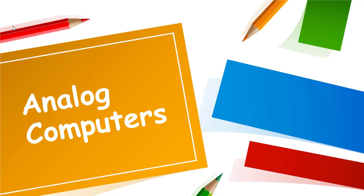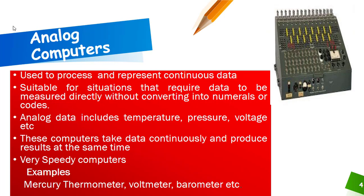The first type is analog computers. Analog computers are used to process and represent continuous data, and they are suitable for conditions that require data to be measured directly without converting into numbers. When we talk about analog data, that means temperature, pressure, weight, and voltages.